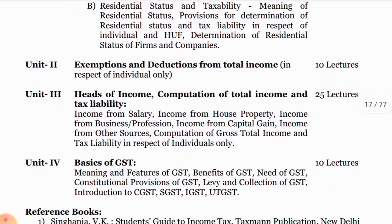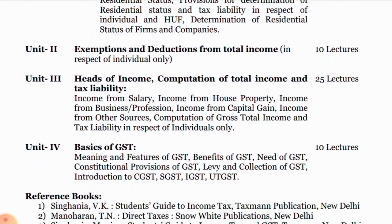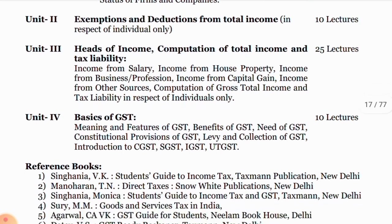Unit 2nd: exemption and deduction from total income in respect of individual only. Unit 3rd: heads of income — computation of total income and tax liability: income from salary, income from house property, income from business or profession, income from capital gain, income from other sources, and computation of gross total income and tax liability in respect of individuals only.